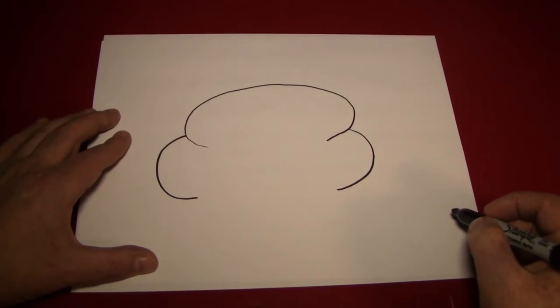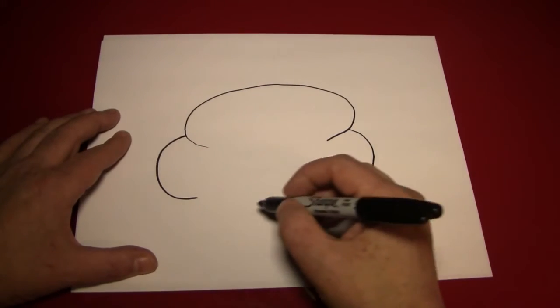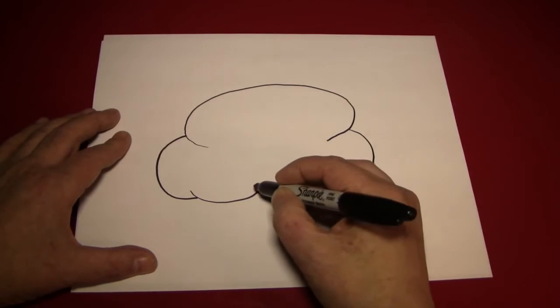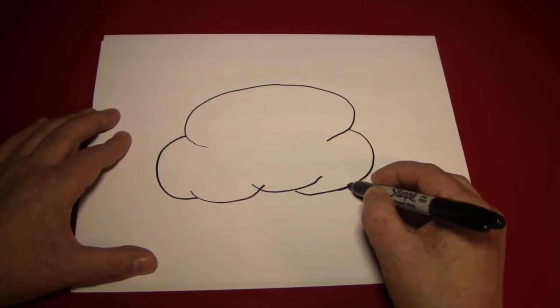Now all we have to do is connect these two lines with little curves on the bottom, like so. One little curve. Two little curves. Three little curves.